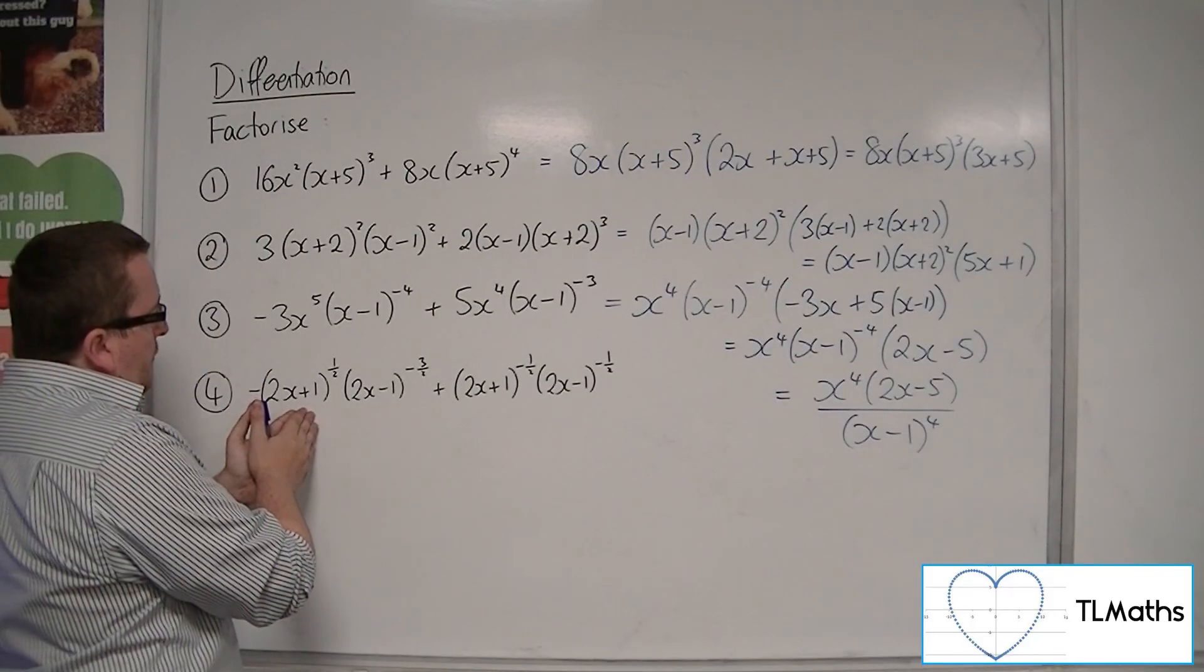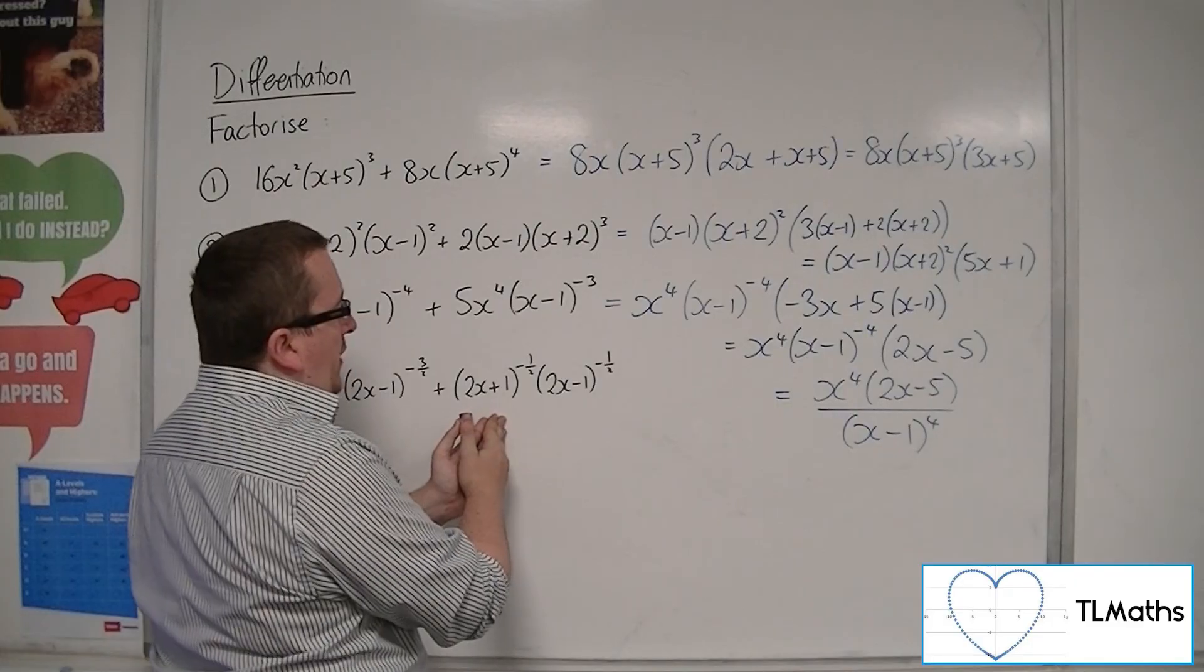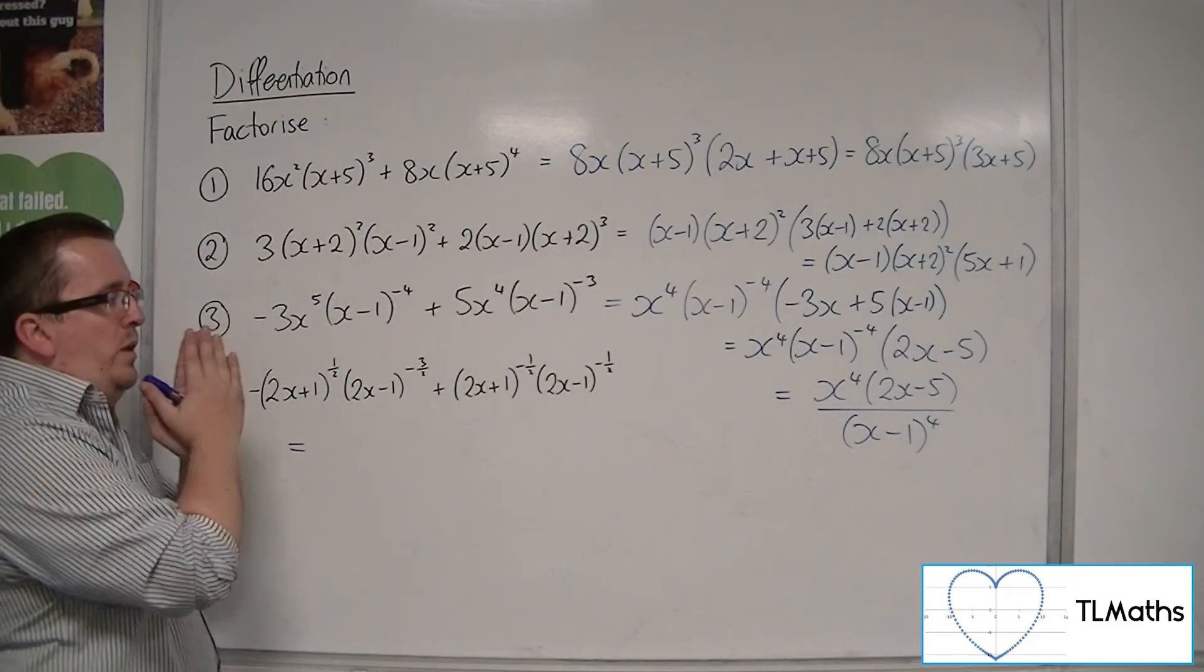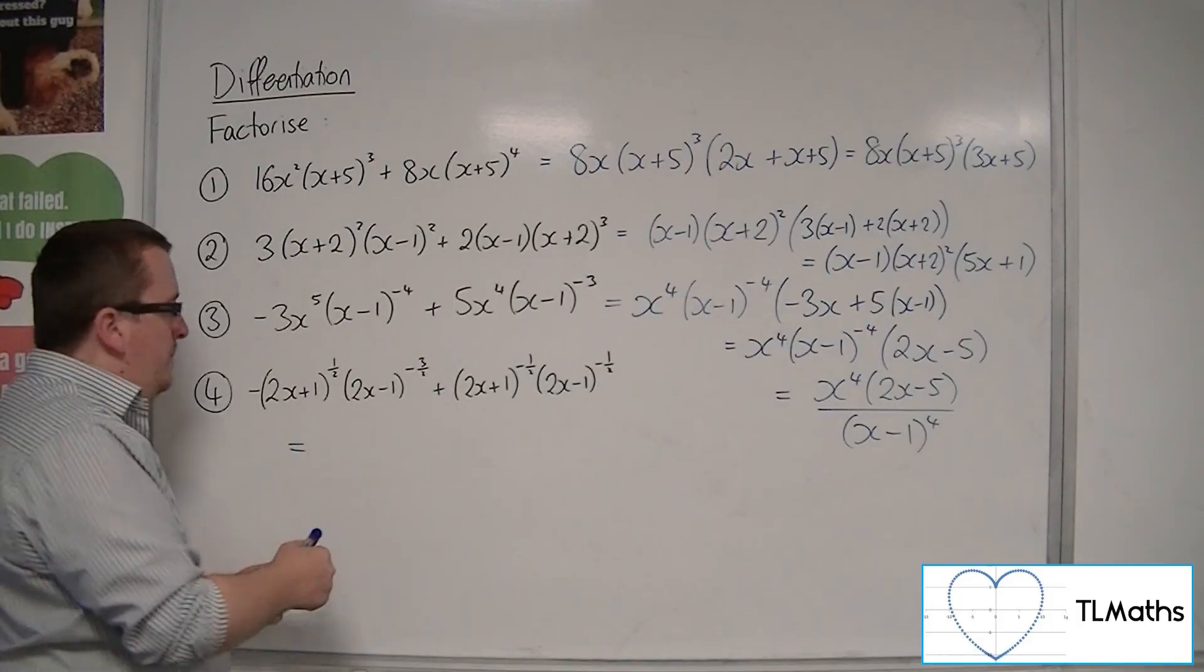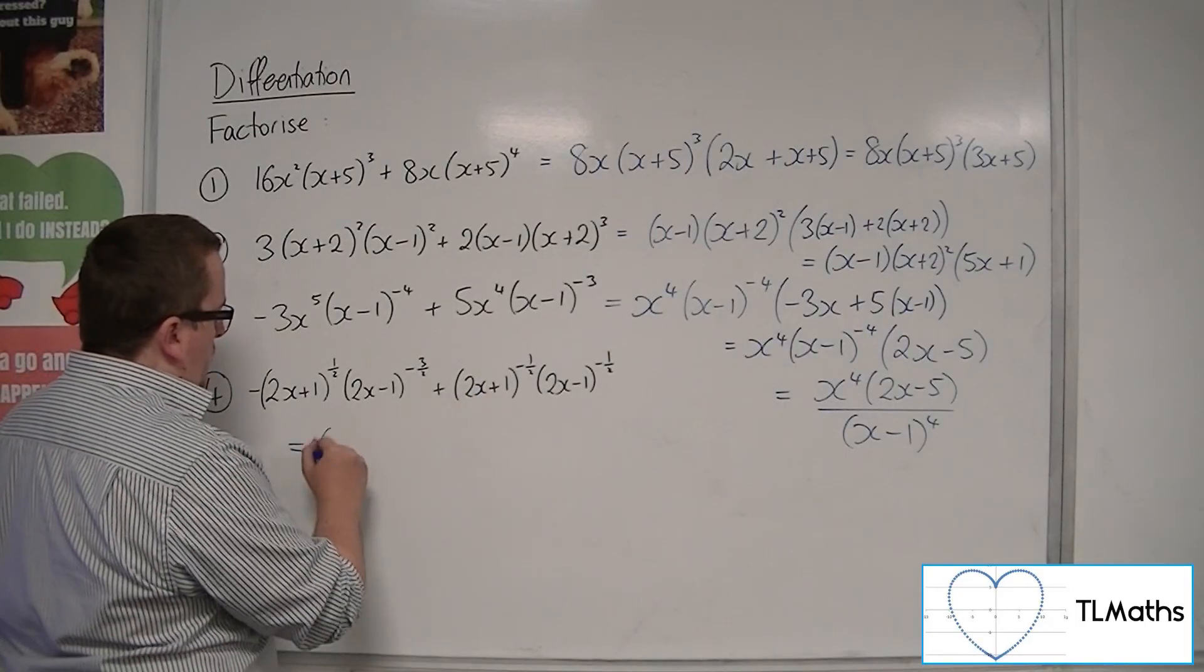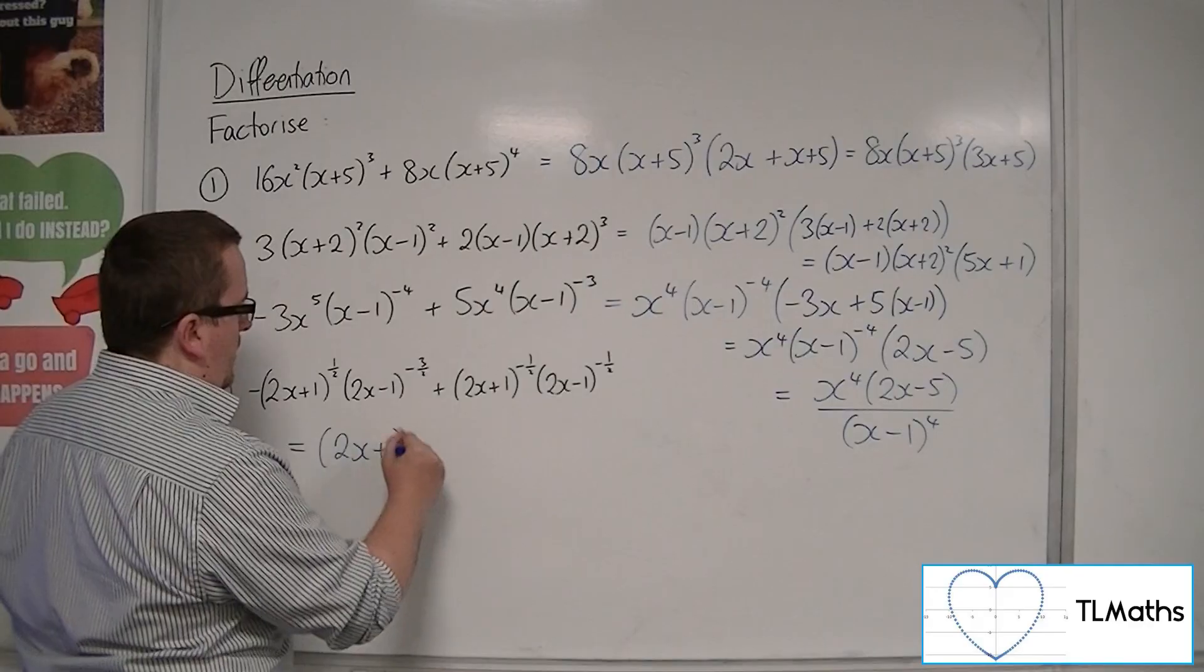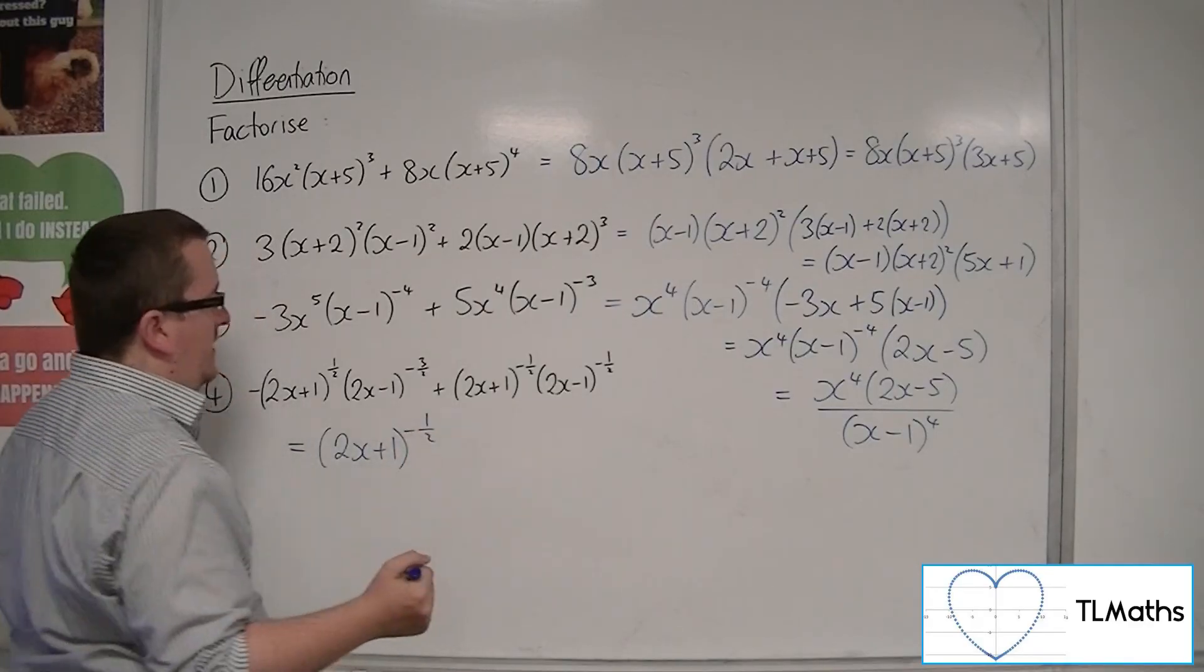We've got (2x+1)^(1/2) and (2x+1)^(-1/2). So we pull out the least of those two, which is that one there. So (2x+1)^(-1/2) gets factored out.